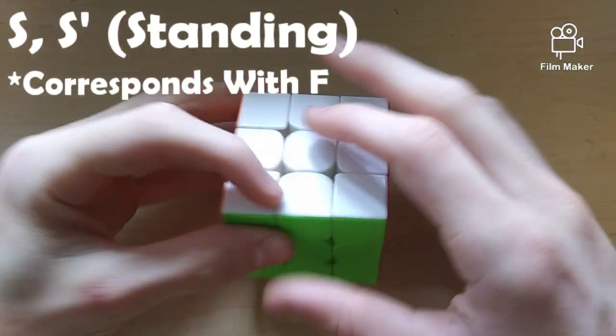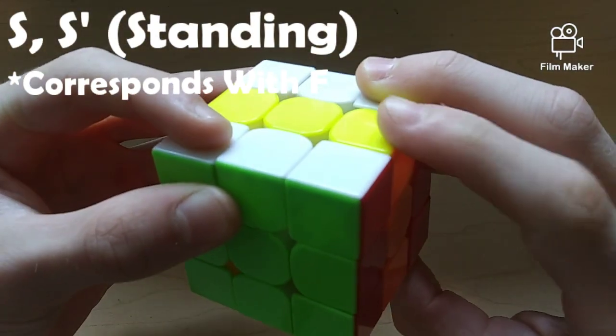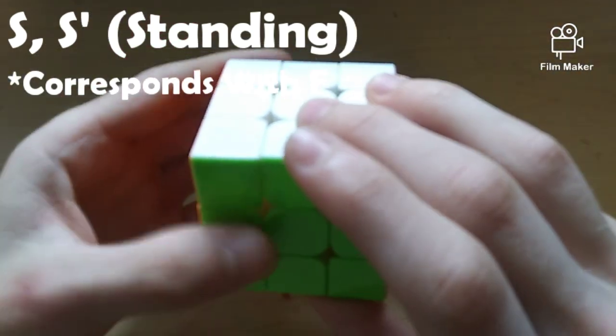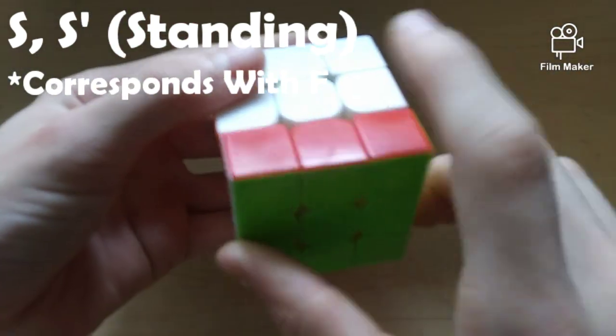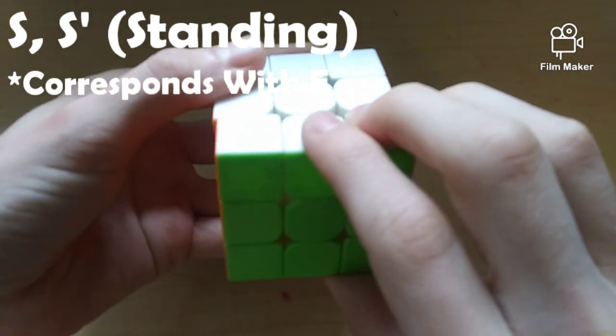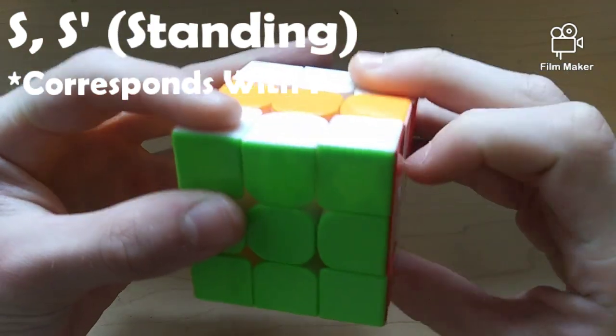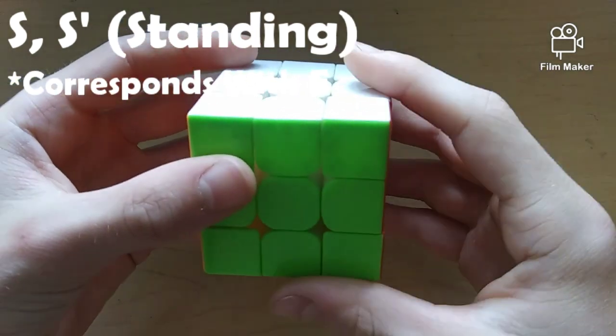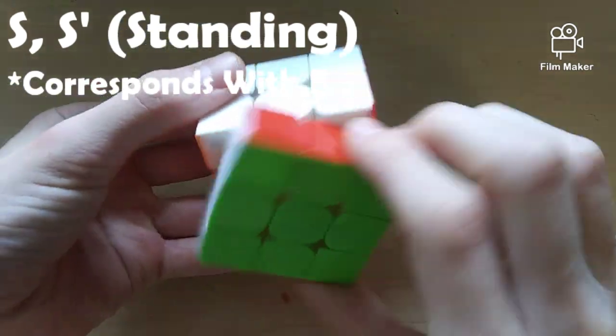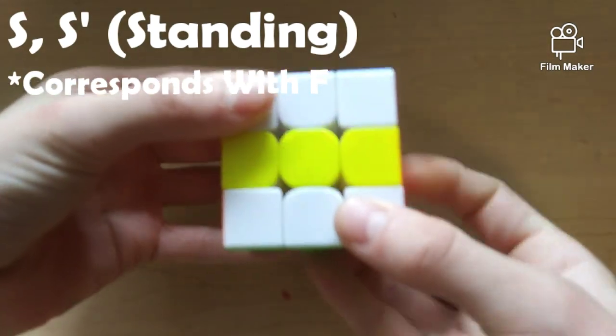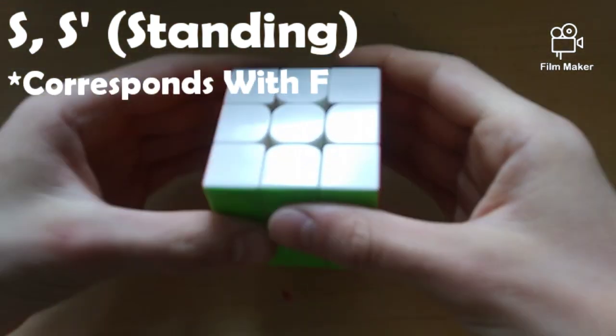And, finally, we have the S slice move, which again, for clarification, means standing. The S slice move moves correspondingly to the F move. So, if you want to do an S, you would think of F, which moves that way. So, you do the S that way, as well. If you want to do S', you think of F'. And you move the S layer in that direction. And then, of course, we have S2, which just moves it twice, in either direction.